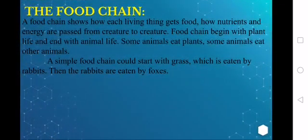First we have the food chain. A food chain shows how each living thing gets food, how nutrients and energy are passed from creature to creature. Food chain begins with plant life and ends with animal life. Some animals eat plants, some animals eat other animals.